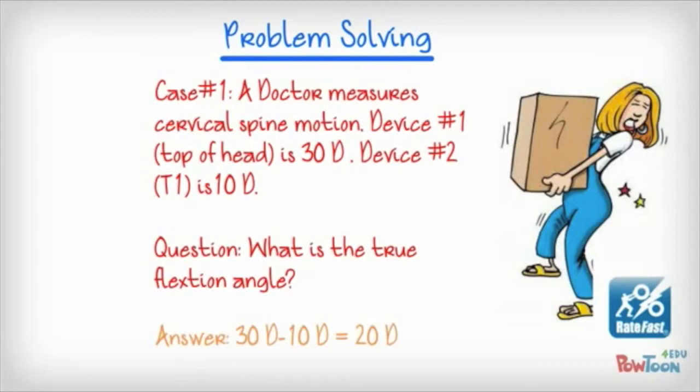The first device, inclinometer number one, is placed on the top of the head, and the second inclinometer device, number two, is placed at the T1 landmark, the bottom of the neck. As the individual bends forward, the farthest she can go, we get 30 degrees on the top, device number one, and 10 degrees on the bottom.